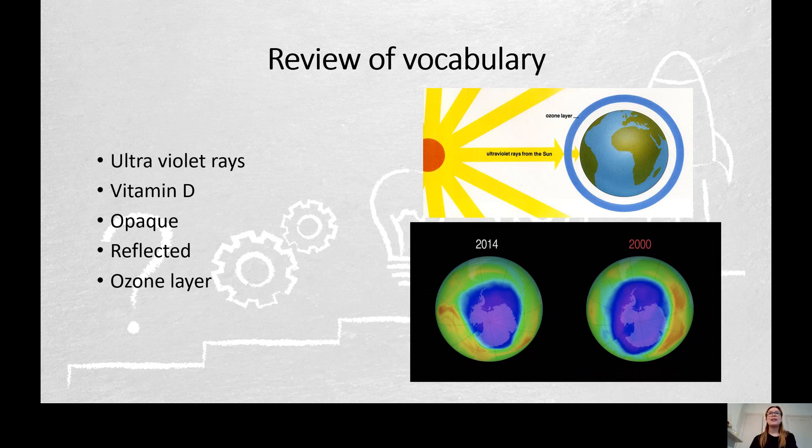Ozone layer. So in this picture here we see the blue ring, that is the ozone layer. It is a layer around the in the atmosphere of the earth that the ultraviolet rays pass through. And we see a picture here of the ozone layer in the year 2000 compared to it now. And we can see that there was a hole in the ozone layer in 2000 and there is still a hole but the hole is smaller.